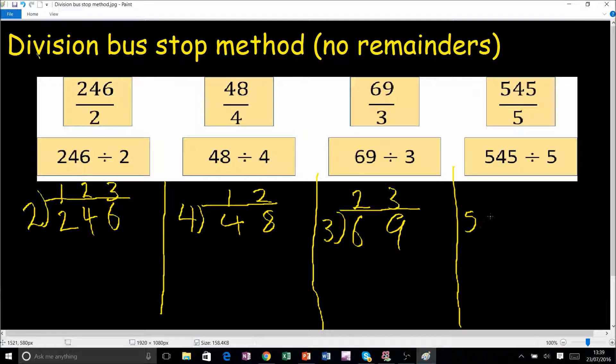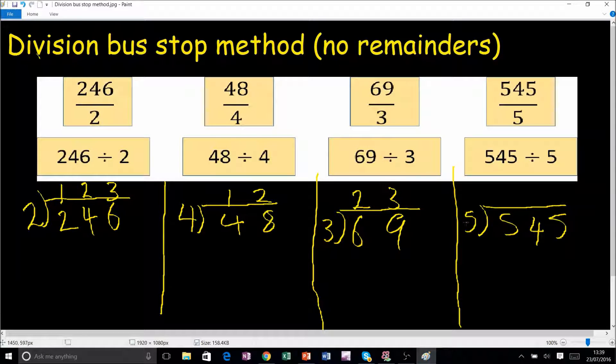So we've got 545 divided by 5. How many 5's go into 5? 1, remainder nothing. How many 5's go into 4? Well, we can't really do that, so 0, remainder 4. Actually, this one does have remainders in it. Well, never mind, it doesn't matter.